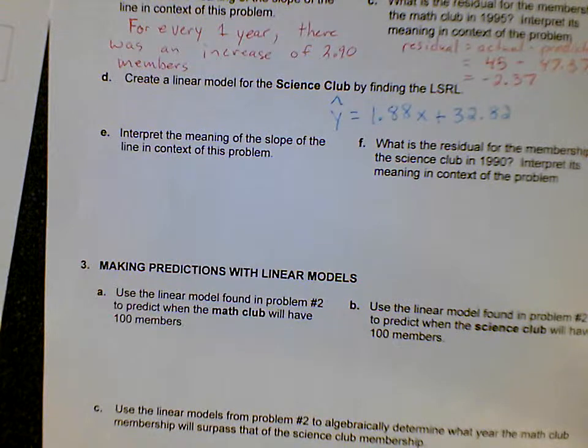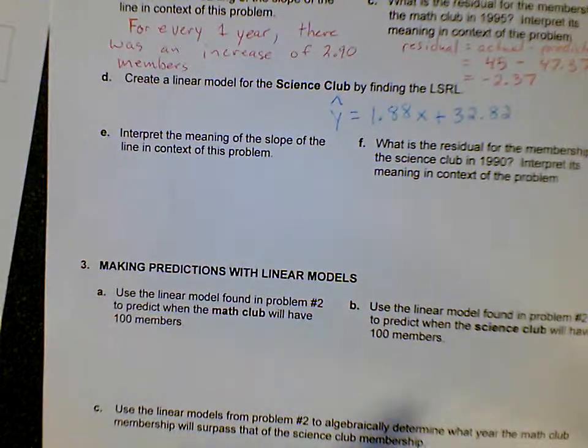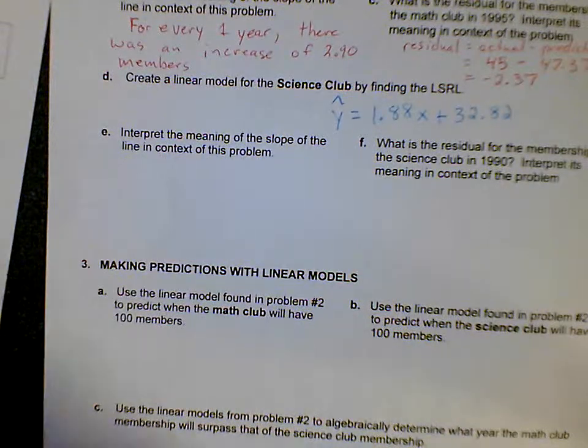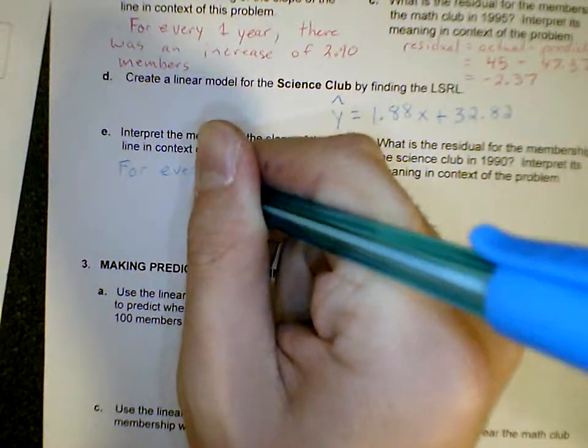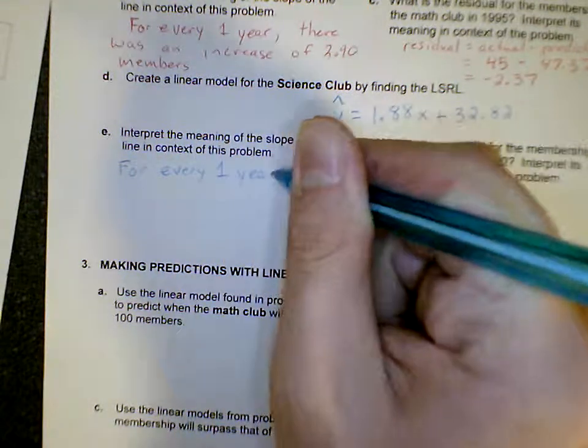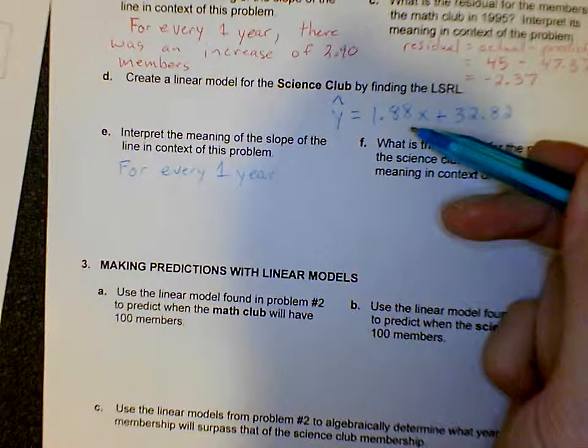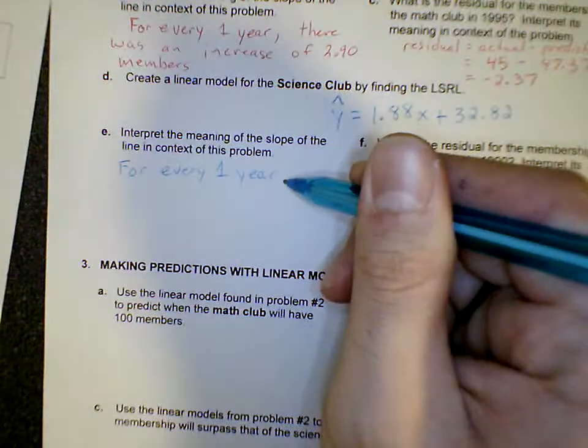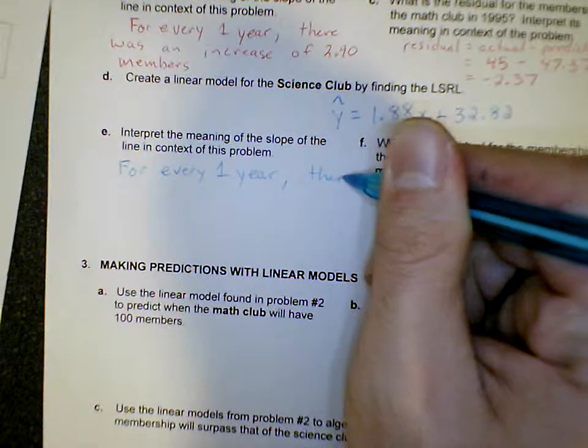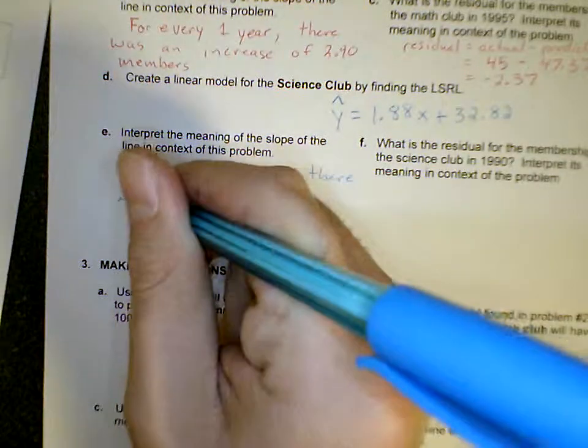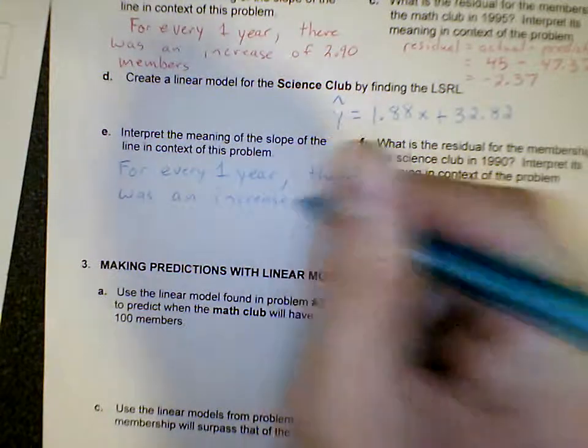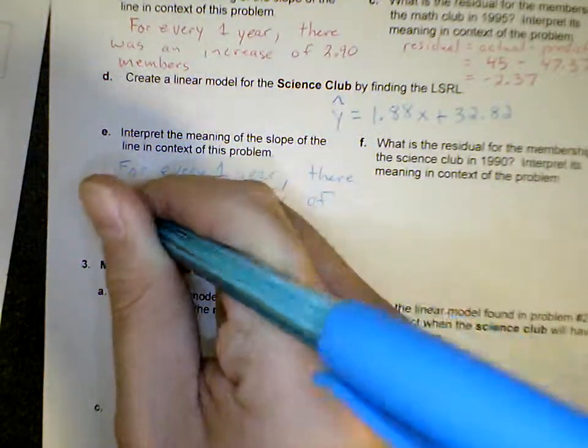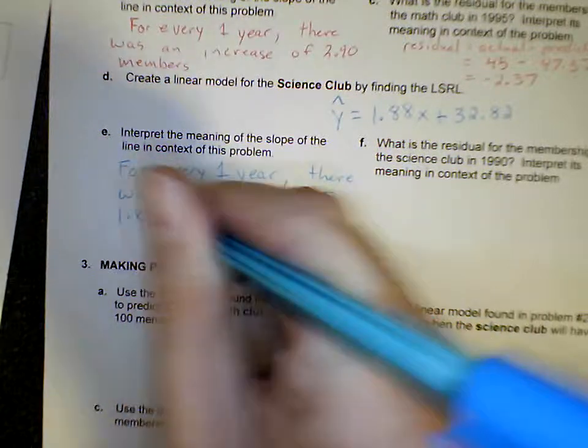Question E says interpret the meaning of the slope for the line in context of this problem. So it's going to be very similar to letter b. So for every one year, because remember our slope is 1.88 over 1, so for every one year there was an increase of 1.88 members.